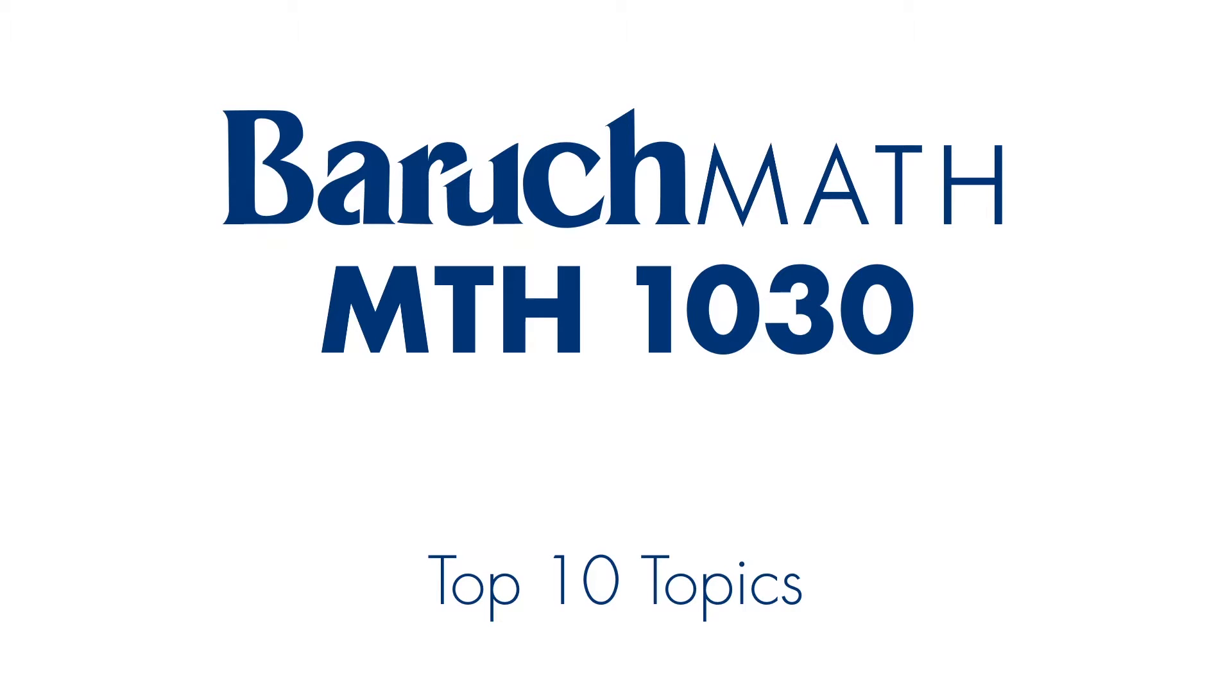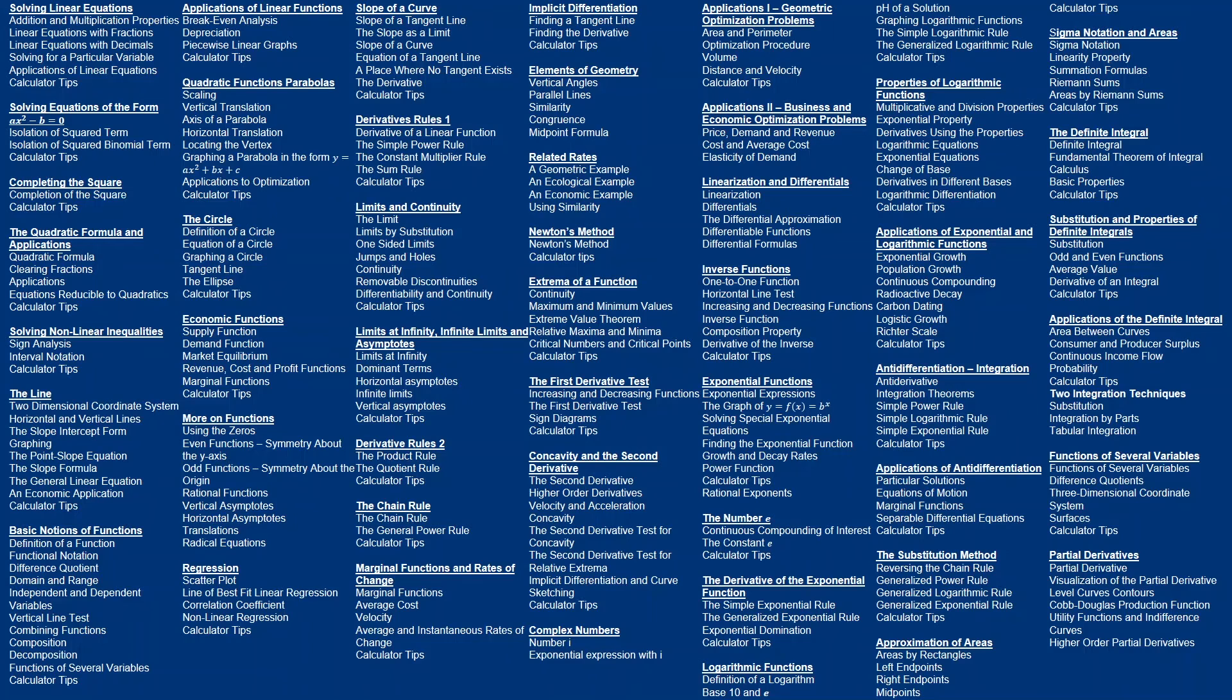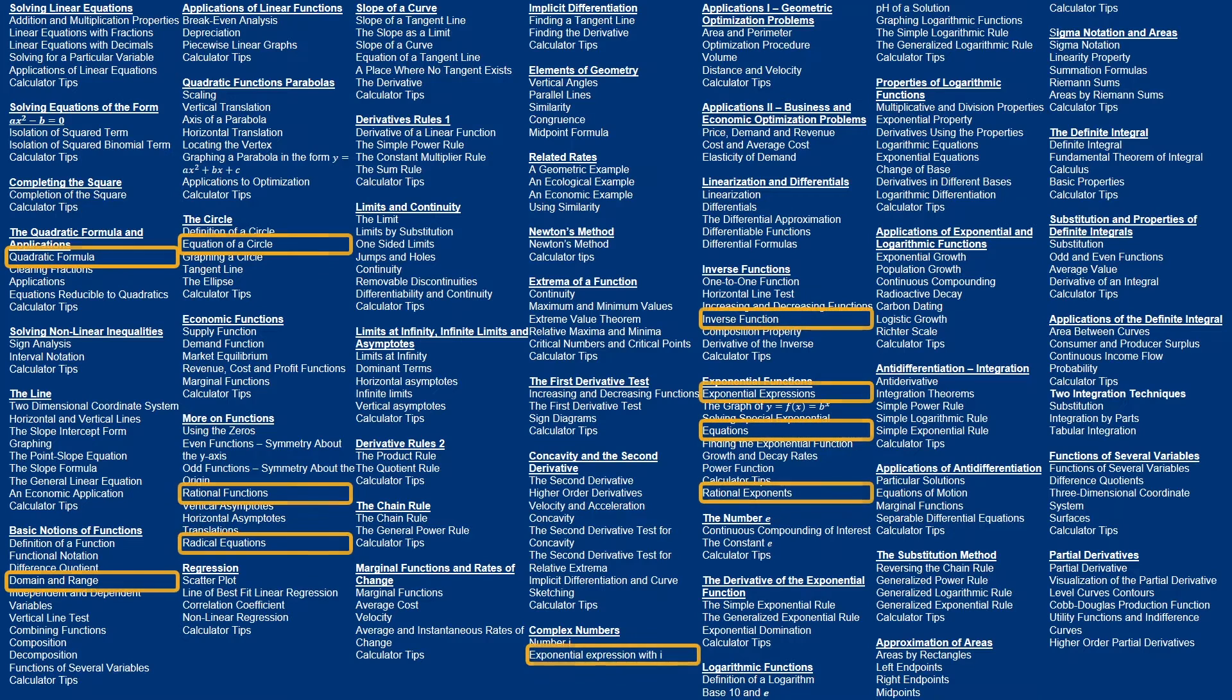In order to ace MTH 1030, you need to know the following 300 plus topics. Well, that's a lot of topics. But if studied efficiently, even less than 24 hours study could dramatically improve your results. I'm going to focus on the top 10 most common topics that appear on Baruch MTH 1030 finals.